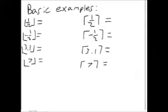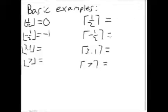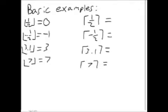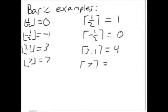Here are some basic examples of floor and ceiling functions. The floor of 1/2 is 0. The floor of negative 1/2 is negative 1. The floor of 3.1 is 3. And the floor of 7, because it is an integer, is just 7. The ceiling of 1/2 is 1. The ceiling of negative 1/2 is 0. The ceiling of 3.1 is 4. And because 7 is an integer, the ceiling of it is just 7.